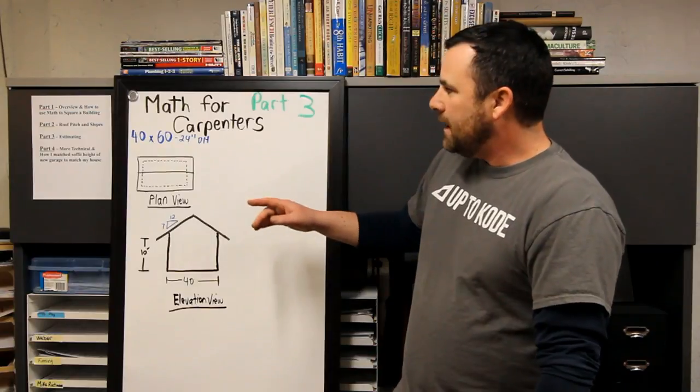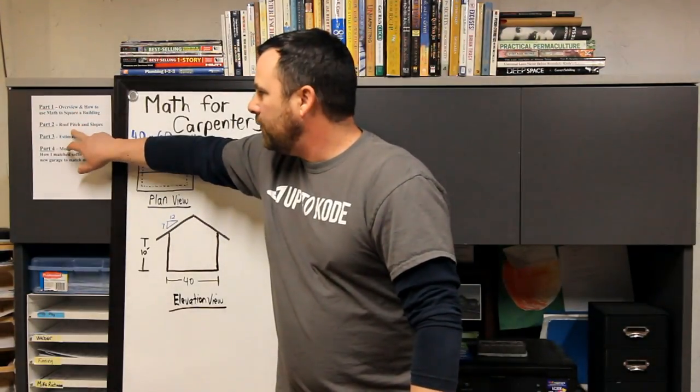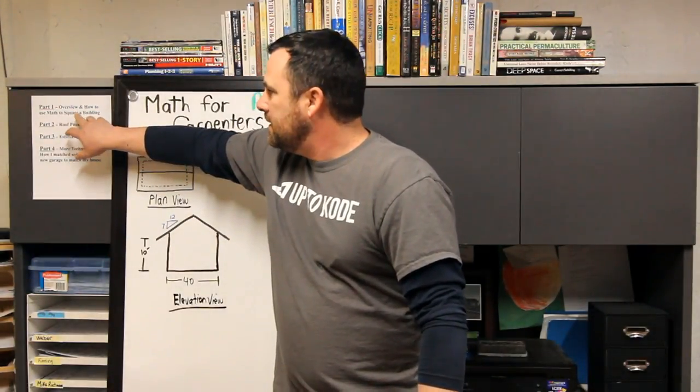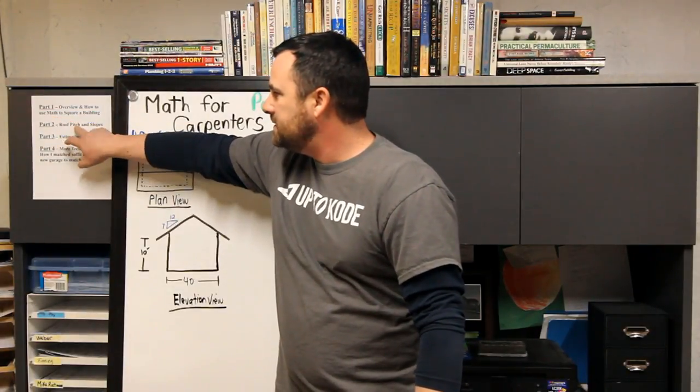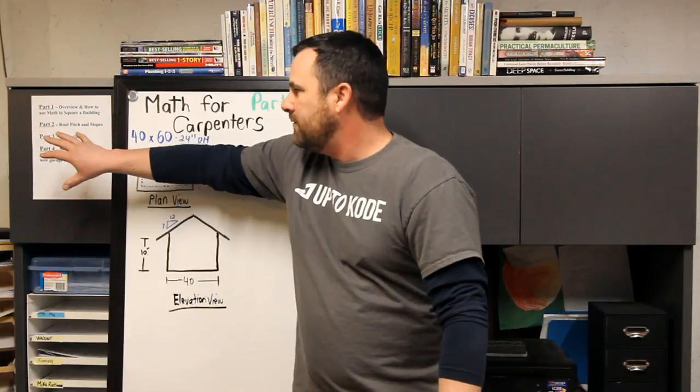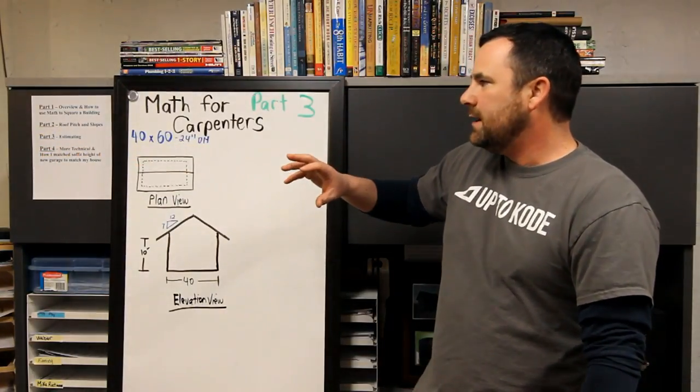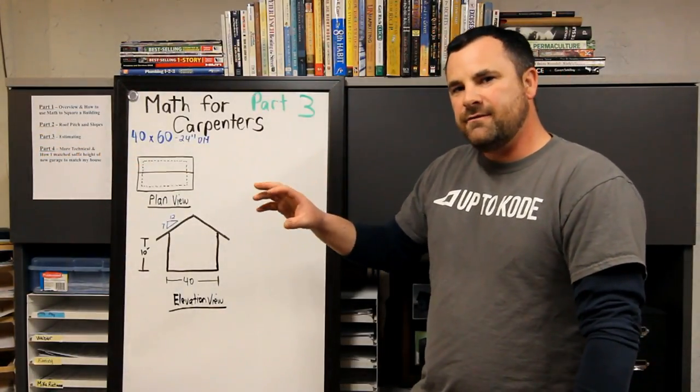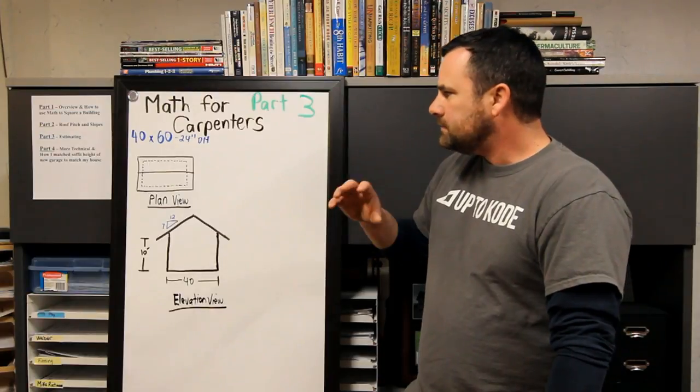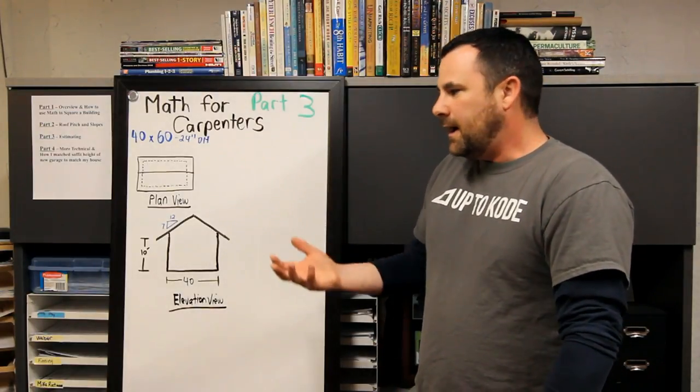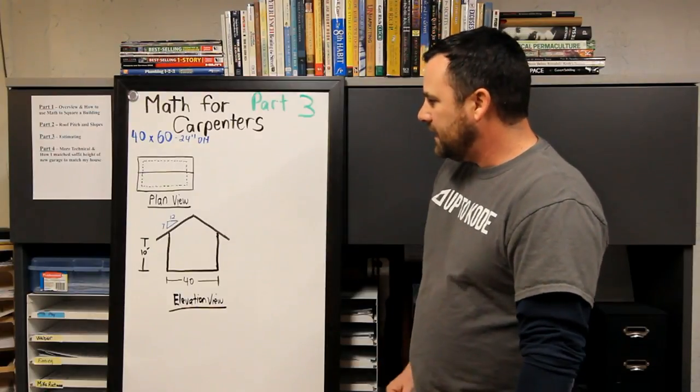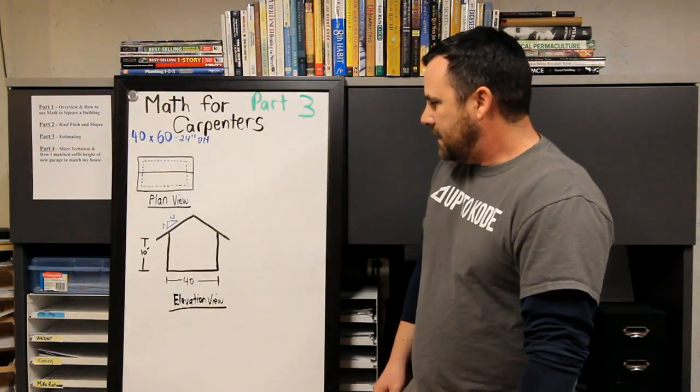If you haven't watched all our videos, just quick: part one was just an overview on how to square a building with two methods. Part two was just roof pitch manipulating and rise over run, going into a little bit of rafter math. Not crazy, but figuring out your slope gain factor to determine how to cut rafters, stuff like that.